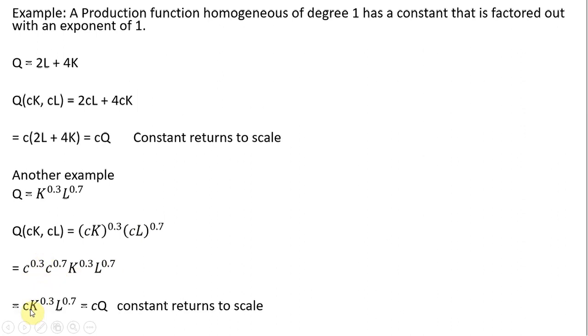Adding up the exponents on the C terms, we just got C. C is completely factored out then. And another example of constant returns to scale, a production function that is homogeneous of degree 1.